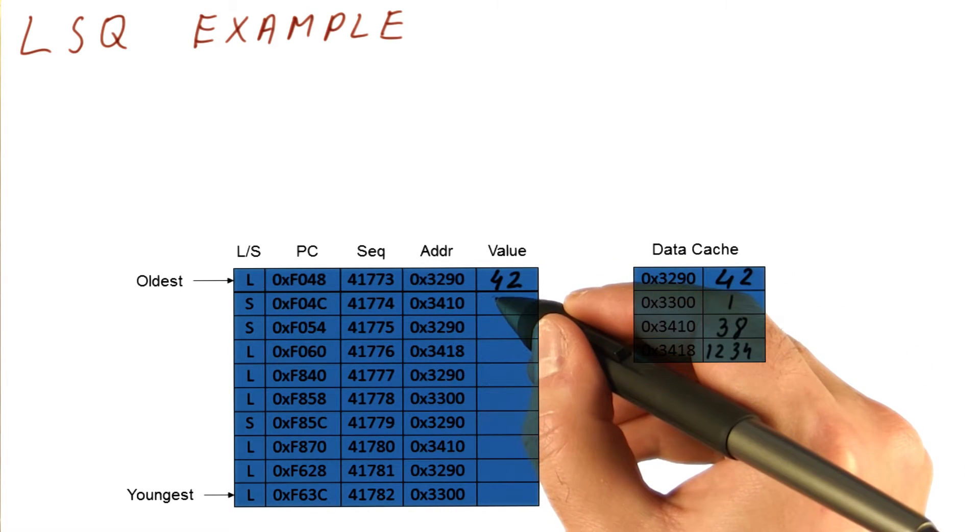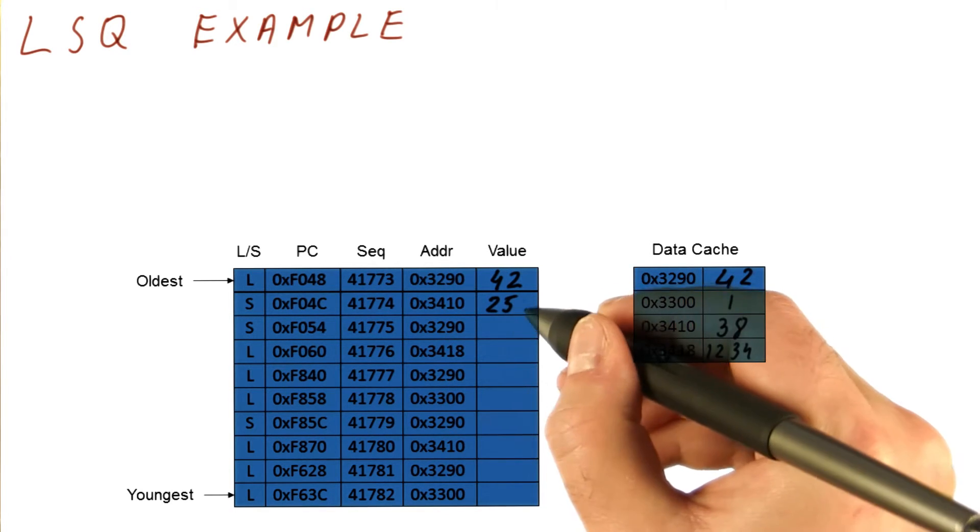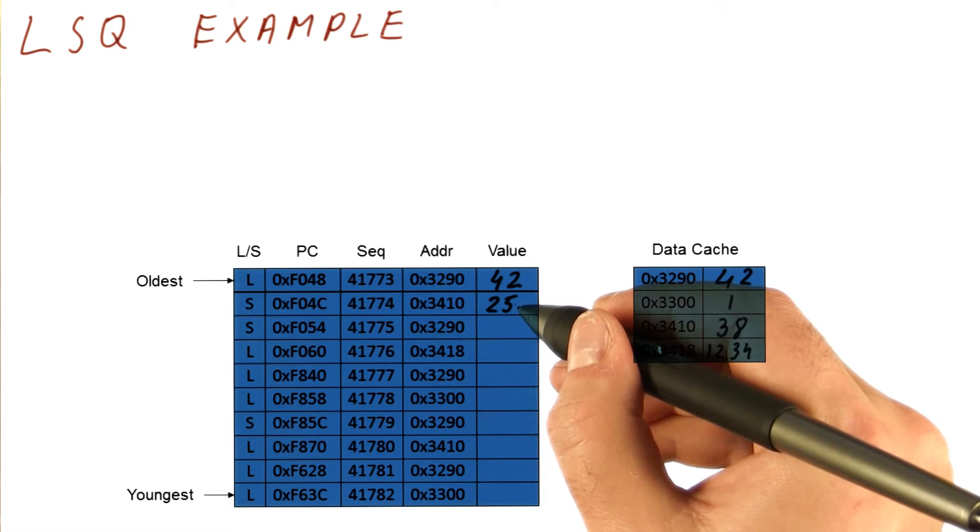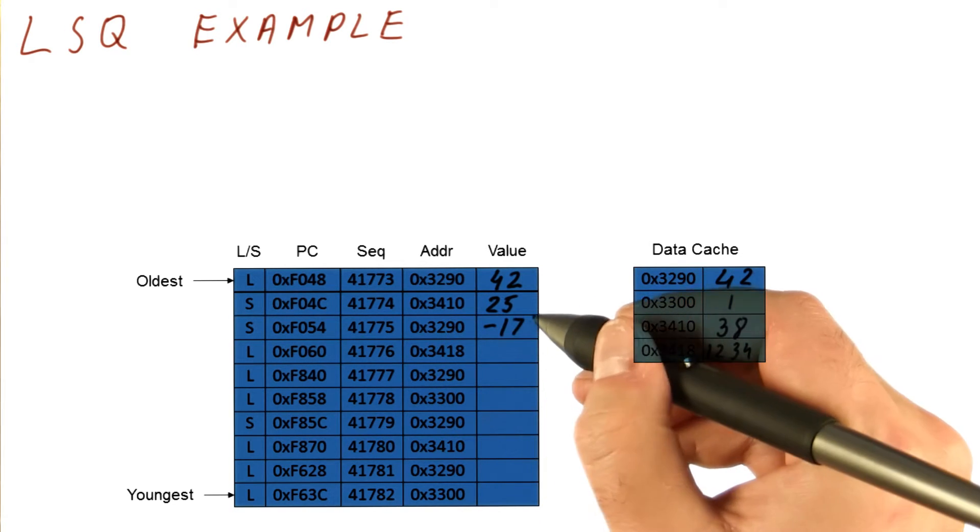Let's say now that this store here computes its result. It basically gets the value it's going to store. Let's say that it gets 25. Note that this store doesn't really put that value yet in the cache. That will happen when it commits. So this is only that we have gotten the value from the instruction that produces the register that we will use as our source value to store in memory.